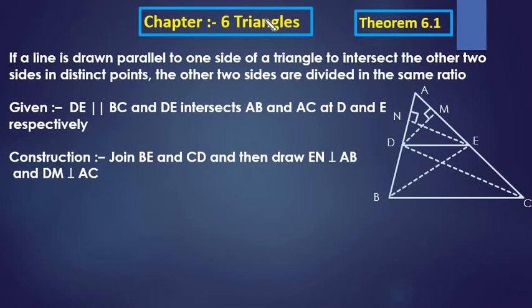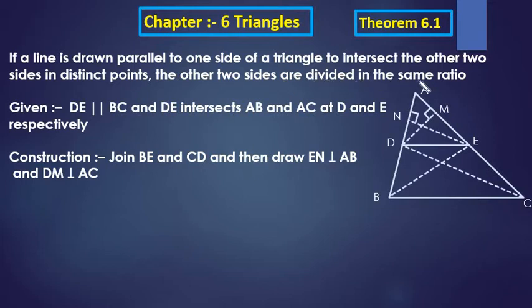Good morning students. Chapter 6, Triangle — Theorem 6.1. Today I will explain about this theorem. What is this theorem? Let me first read it. If a line is drawn parallel to one side of a triangle to intercept the other two sides in distinct points, the other two sides are divided in the same ratio.